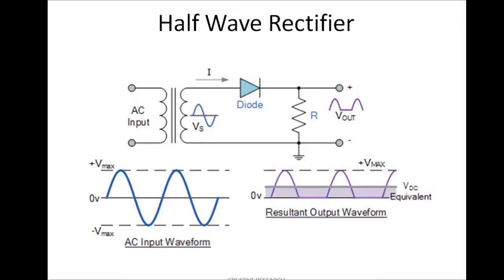In the half wave rectifier, we pass only the positive half cycle and block the negative half cycle, because the diode allows current only in the positive half cycle of the AC input. The input waveform has a Vmax — the maximum voltage — and what we get at the output is a DC voltage but only for the positive half cycle. This is a pulsed DC. We can convert it to a fixed DC by connecting a filtering capacitor, and we will get a fixed DC output after connecting a single diode.